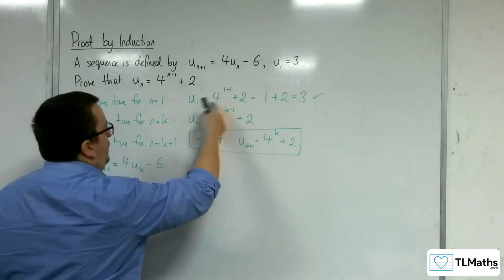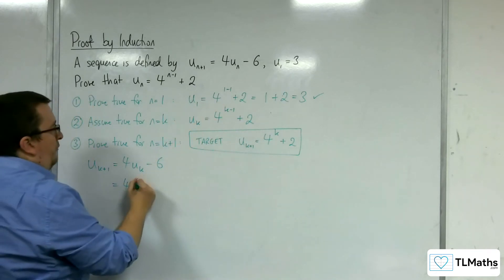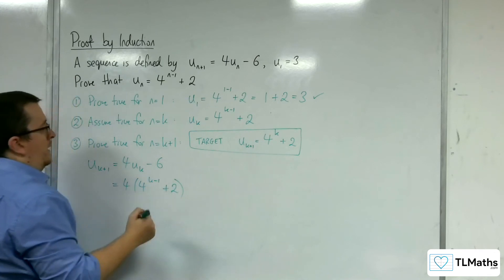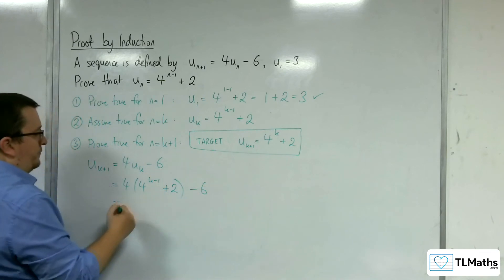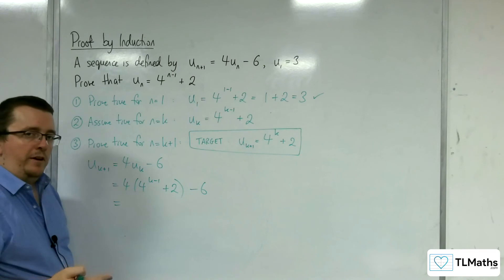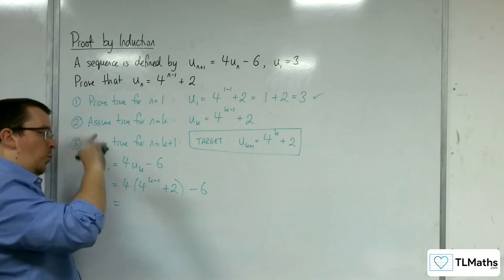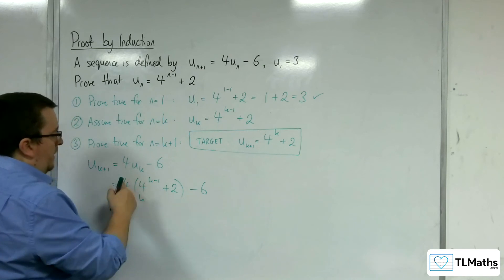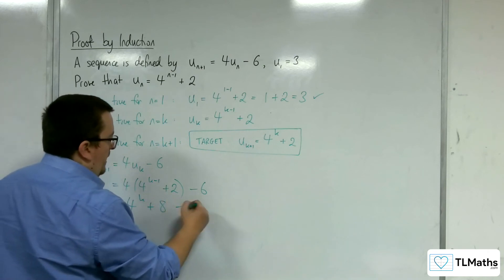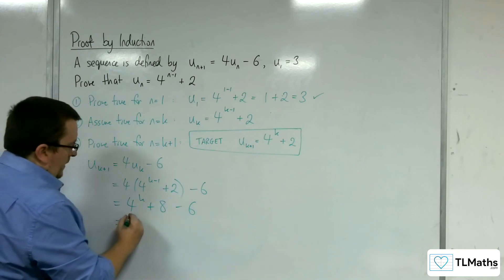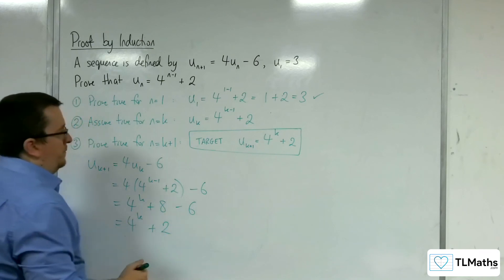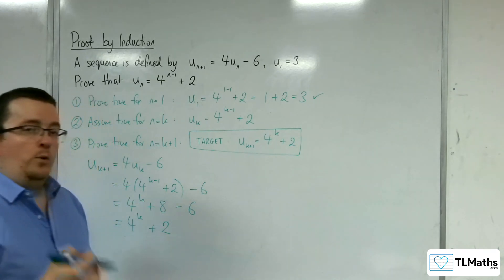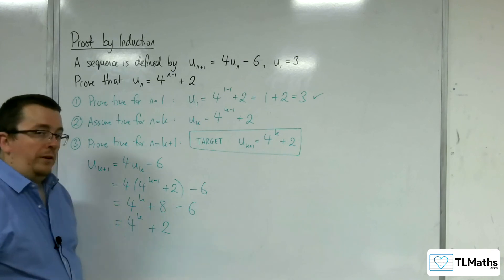We've worked out what u(k) is because we've assumed this to be true. So we've got 4·(4^(k-1) + 2) - 6. That gives us 4^1 · 4^(k-1) — adding the powers, 1 + k - 1 leaves us with k — so 4^k from that. Then 4 × 2 is 8, and taking away the 6 on the end gives us 4^k + 2. That is precisely what we wanted, and so it works for n = k + 1.